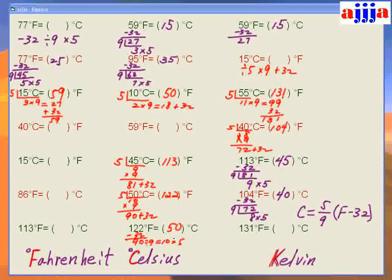So remember: Fahrenheit to Celsius is minus 32, then divide by 9, times 5. Remember that one. Somebody has a photographic memory — use that. Somebody who has a different kind of memory — use that technique. Whatever technique works for you, use it!